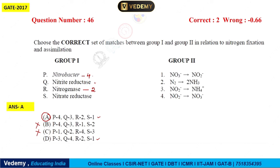Next is Nitrite Reductase. What is the work of Nitrite Reductase? By its name, it will reduce nitrite. The work of Nitrite Reductase is to change NO2⁻ to NH4⁺. And Nitrate Reductase converts NO3⁻ to NO2⁻, so that is 1. If we see the sequence, it is 4, 3, 2, 1. Our first option is correct here.